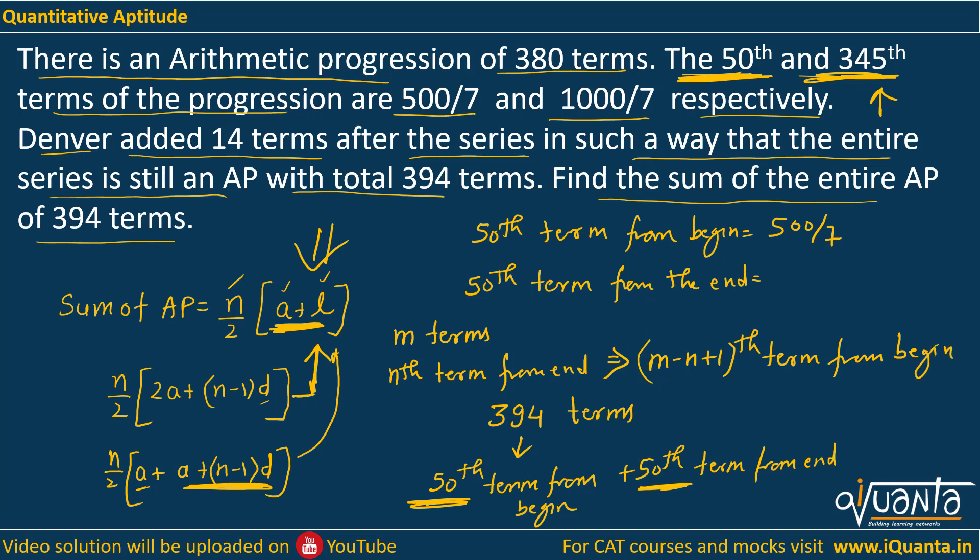So similarly, if I try to find out 50th term from the end in an AP of 394 terms, it will be equal to m will be 394 now, because I have an AP of m terms. So 394, we are trying to find out the 50th term from the end, so it will be 394 minus 50 plus 1, which will be 345th term from beginning.